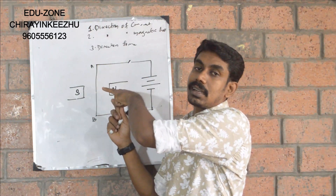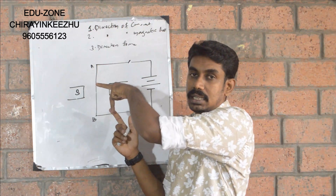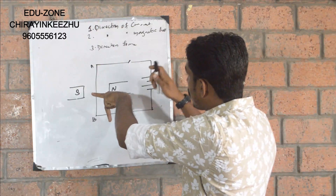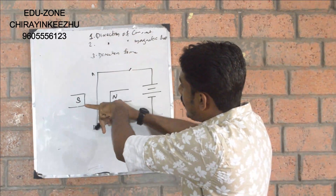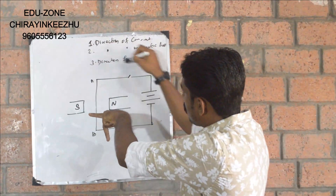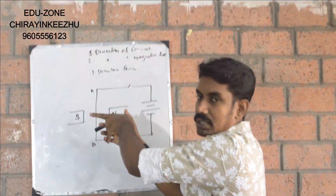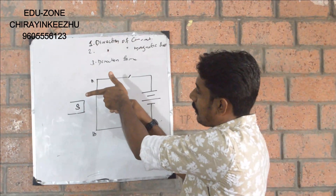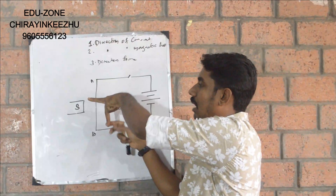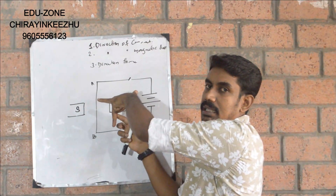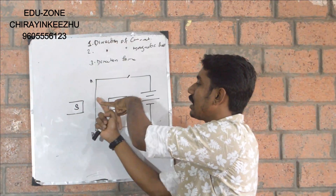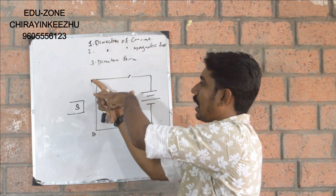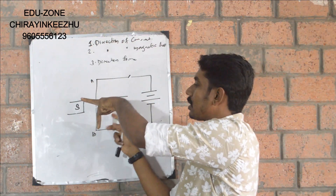What is the current direction? What is the middle finger? The current direction is positive. If the current direction is positive, the current flow is positive. If we put the middle finger in the current direction, we have four fingers in the correct position. The magnetic field is in the south direction, and the current direction is positive.